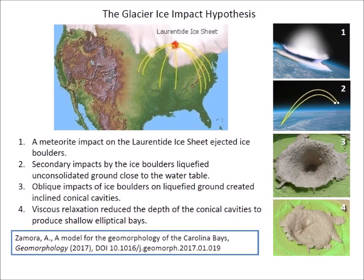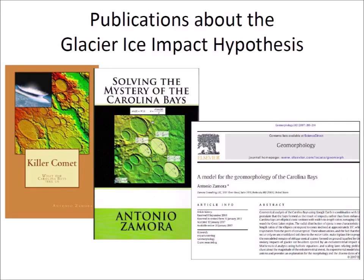The Glacier Ice Impact Hypothesis proposed that the Carolina Bays and the Nebraska Rainwater Basins were made by secondary impacts of glacier ice ejected by a meteorite impact on the Laurentide Ice Sheet approximately 12,900 years ago. The impacts of the ejected ice chunks with energies of 13 kilotons to 3 megatons liquefied unconsolidated ground, and the ice projectiles created conical cavities inclined at about 35 degrees that were remodeled into shallow elliptical bays by viscous relaxation. Two books describe the Glacier Ice Impact Hypothesis prior to its publication in 2017 in the peer-reviewed journal Geomorphology. The book Killer Comet introduced the hypothesis in 2014, and the book Solving the Mystery of the Carolina Bays, published in 2015, discussed the quantitative deductions that can be made about the Younger Dryas extraterrestrial impact from the geometry and emplacement of the Carolina Bays.